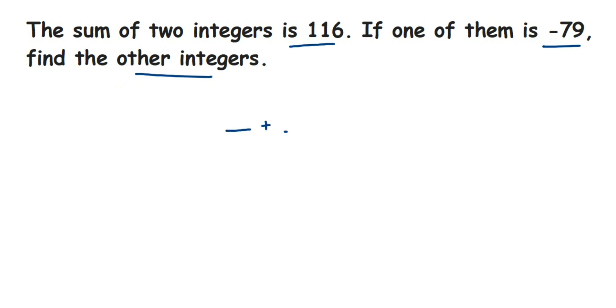So if I frame this, it will be like we are adding our two integers and the sum is equal to 116, and one number they have given is -79 and we have to find out the other one. So this unknown number, we are going to assume a variable x and then we are going to form an equation and solve it.